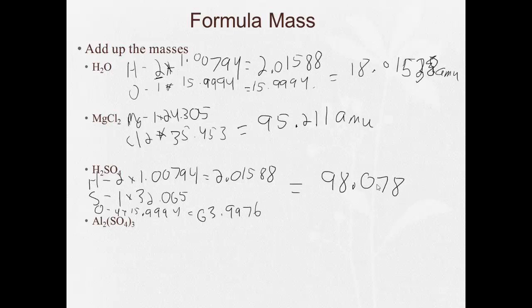And the whole thing equals 98.07848, but we're allowed only 3 after our decimal. So, that's 98.078 AMU.